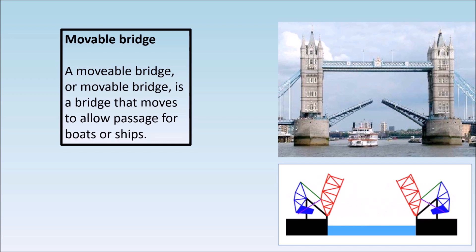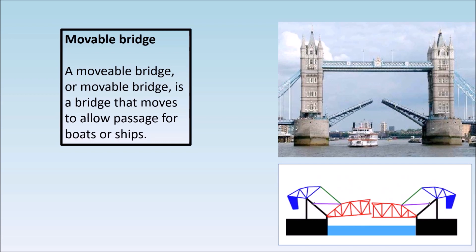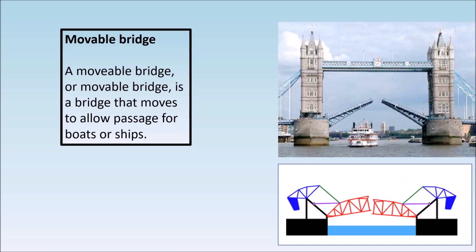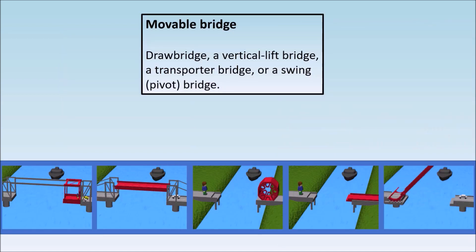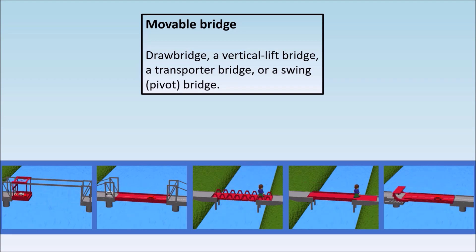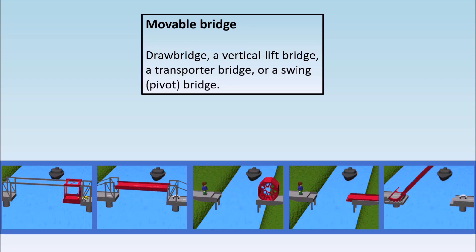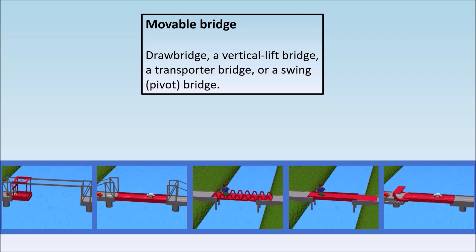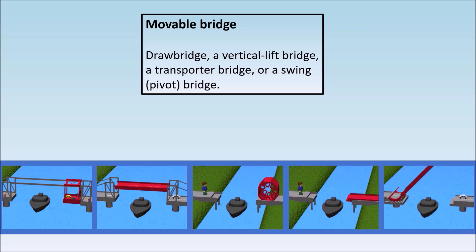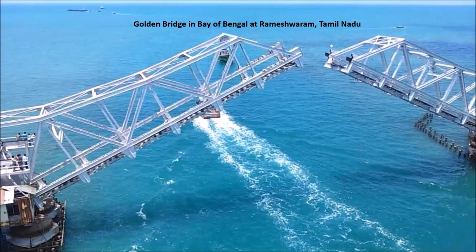Movable bridge — a movable bridge is a bridge that moves to allow the passage of boats or ships. A drawbridge, a vertical lift bridge, a transporter bridge, or a swing-pivot bridge are all examples of a movable bridge. The golden bridge in the Bay of Bengal at Rameshwaram, Tamil Nadu is an example of a movable bridge.